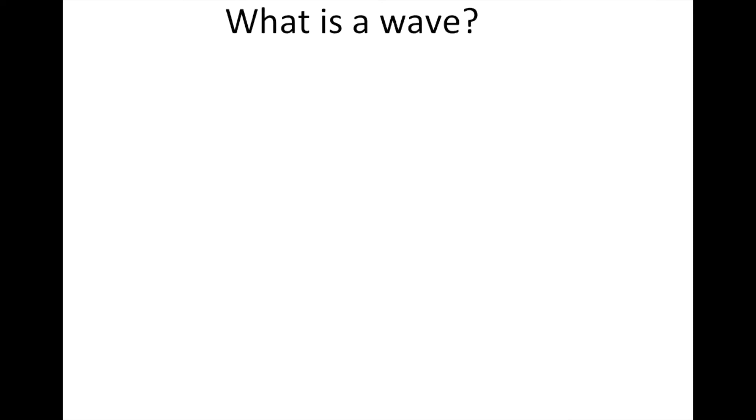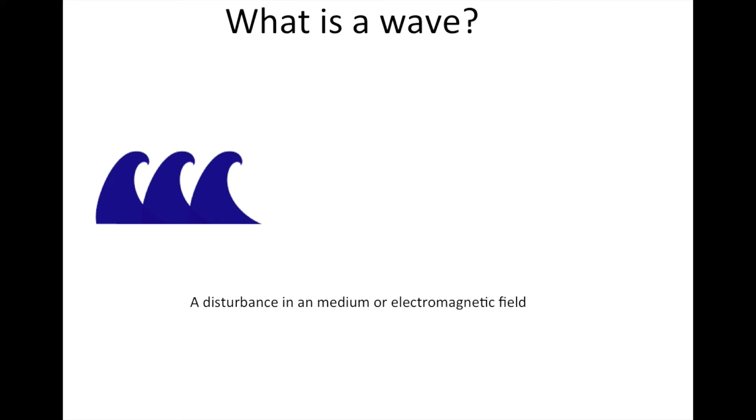So first off, what is a wave? A wave is very simple. It's just a disturbance in a medium or electromagnetic field. So as you can see, this is an ocean wave and it's of course causing disturbances in still water. And then that's how you see a wave in this presentation.